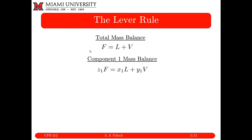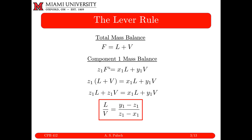We do a simple total and component mass balance. The total mass balance is F = L + V, and the component mass balance is z₁F = x₁L + y₁V. Substituting F = L + V into the component balance, rearranging and collecting terms in L and V, we get L/V = (y − z) / (z − x).